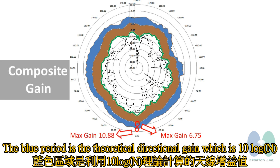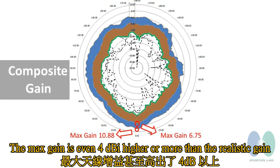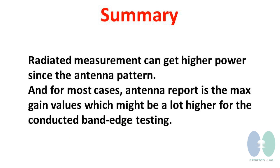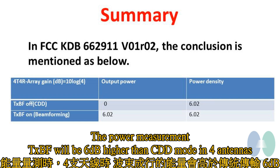The blue region is the vertical directional gain, which is 10 log of the number of antennas. You can see the vertical directional gain is 2 to 3 dBi higher than the isotropic gain, and the maximum gain is even 4 dBi higher. Radiative measurement can get higher power due to the antenna pattern. In most cases, the antenna report uses the max gain values, which might be significantly higher than conductive power testing. This is mentioned in KDB 662911: the power measurement for transmit beamforming will be 6 dBi higher than CDD mode with 4 antennas.